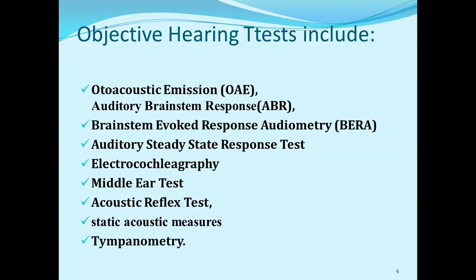The objective hearing tests include: otoacoustic emission, which we call OAE; auditory brainstem response, which we call ABR; brainstem evoked response audiometry, which we call BERA; auditory steady state response test, which we call ASSR; electrocochleography; middle ear test; acoustic reflex test; static acoustic measures; and tympanometry.